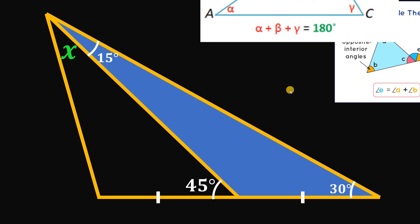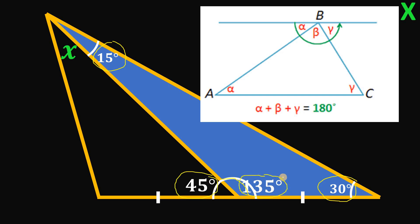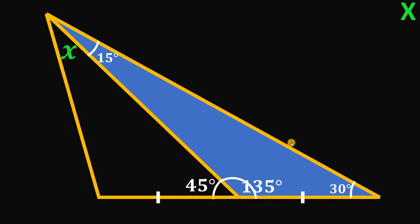Now let's use the theorem that the sum of interior angles of any triangle must add up to 180 degrees. We have 30 degrees and 15 degrees, so this angle must be equal to 135 degrees. We can also verify using linear pairs: 45 degrees plus 135 degrees adds up to 180 degrees. So we know this is 30 degrees and this is 135 degrees.